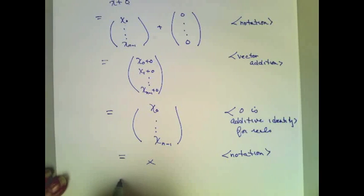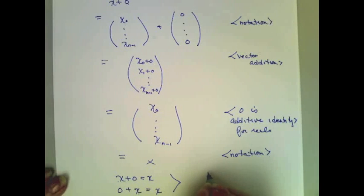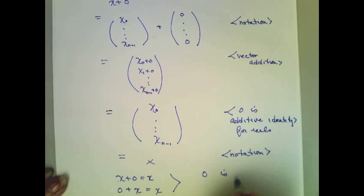Now, we've just proven that x plus 0 is equal to x, and because we know, or we've already proven that vector addition is commutative, x plus 0 is equivalent to 0 plus x, which also must be x. These two together mean that 0 is the identity for vector addition.